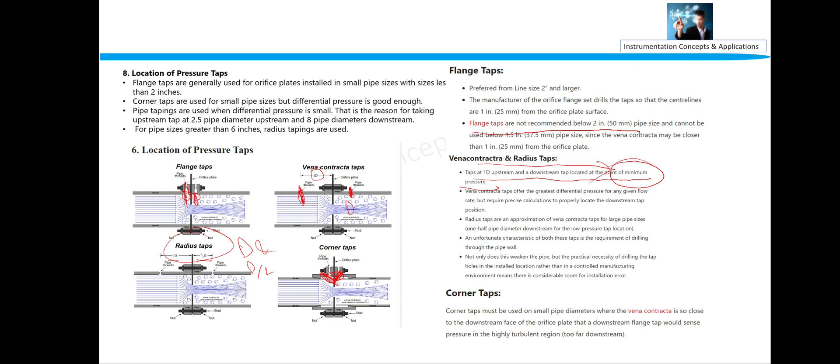And unfortunate characteristics of both these taps is requirement of drilling through the pipe wall. And the corner taps: you can see corner tap must be used for a smaller pipe diameter where the vena contracta is so close to the downstream face of the orifice plate that the downstream face would sense pressure in the highly turbulent region. So corner tap should be used.